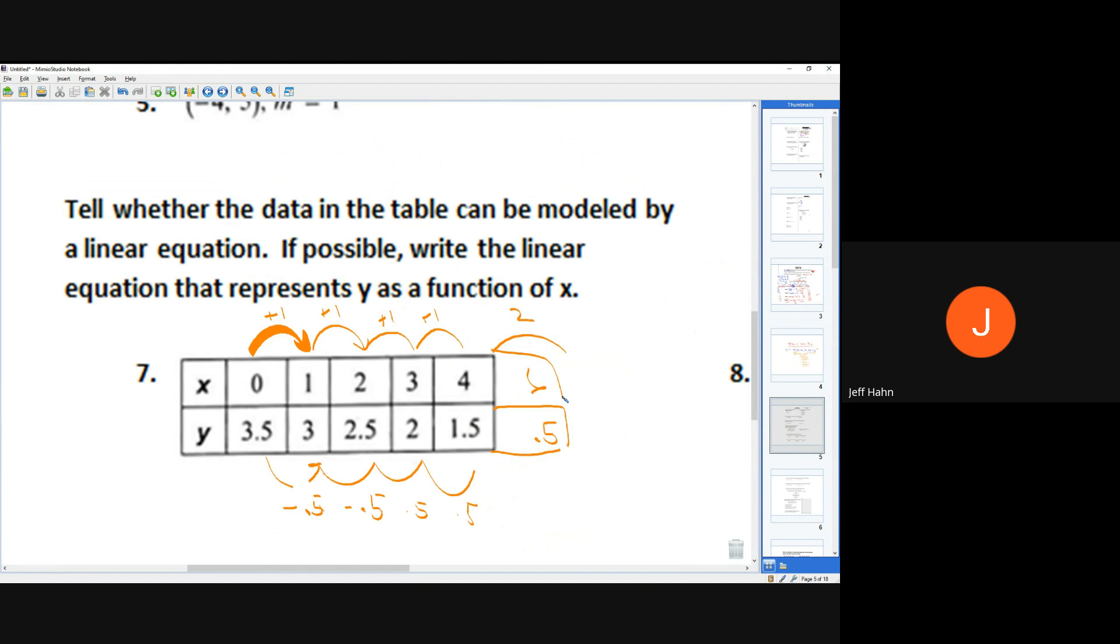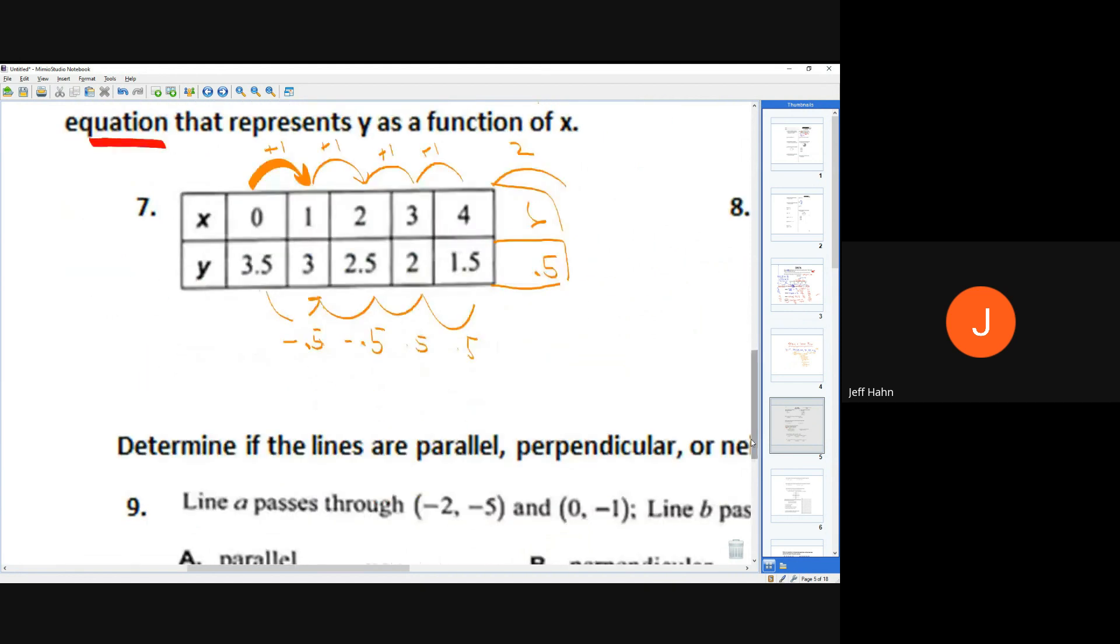It doesn't have to go by 1s. You just have to know it's a constant proportional and constant ratio. Then it asked you probably where you got it wrong. You might have got that right, but you got the writing the linear equation wrong.